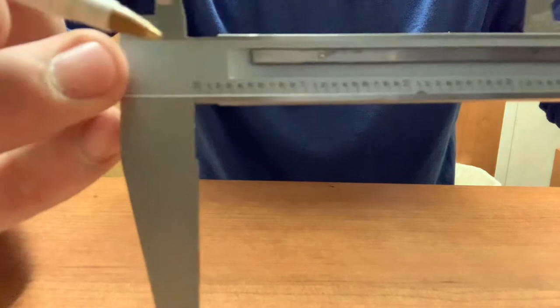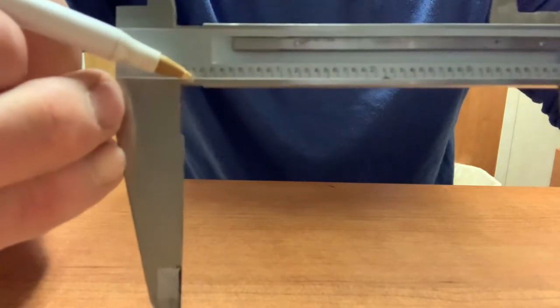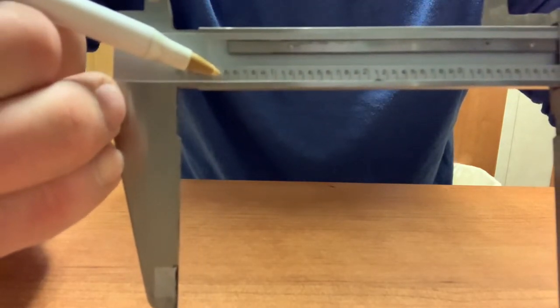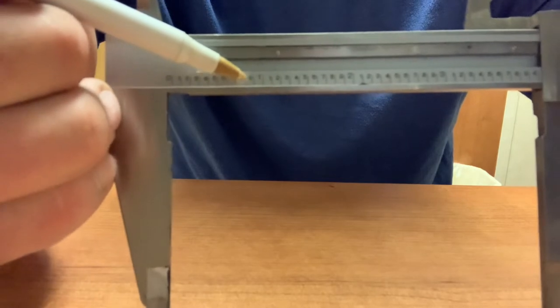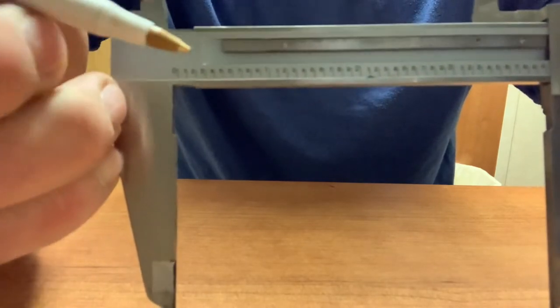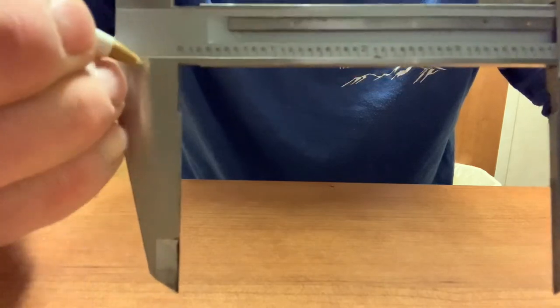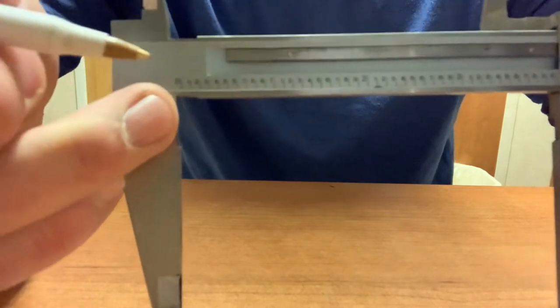And then if you look at the smaller numbers in between the big numbers, there's one, two, three, four, five, six, seven, eight, nine, and then one inch. So this is telling us that there's nine divisions of one inch, or tenths of an inch.